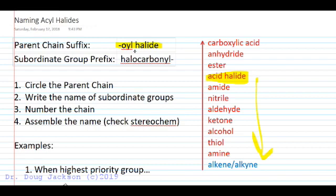If there's a higher priority group present, such as an ester, which is more common in a real molecule, then that acid halide loses its priority and we would name the compound as an ester having a halocarbonyl group. The acid halide subordinate prefix for the group name is halocarbonyl.